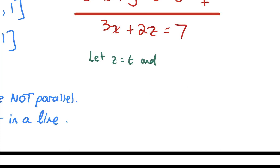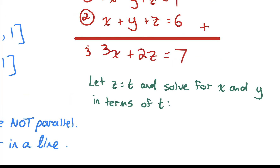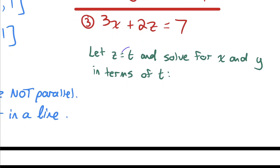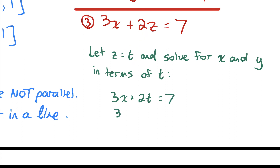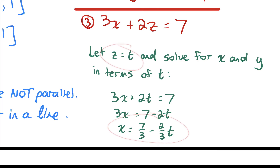So if z = t, I substitute into equation three: 3x + 2t = 7, then isolate x. That gives 3x = 7 - 2t, so x = 7/3 - (2/3)t. Now I have the x equation and the z equation for the parametric equations of the line. All that's left is to solve for the y equation by substituting what we know for x and z into one of the original plane equations.